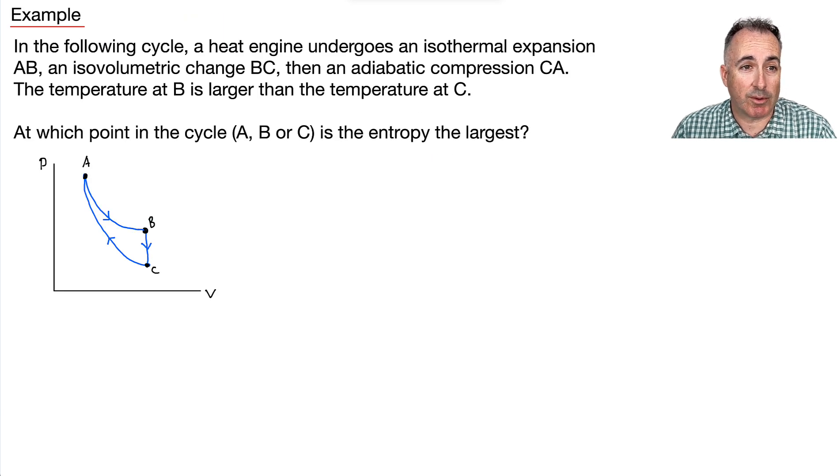Okay, let's do another example. So here we have a cycle where a heat engine undergoes an isothermal expansion, A-B, then an isovolumetric change, B-C, and after that an adiabatic compression, C-A. Now we know that the temperature at B is larger than the temperature at C. We're told that. Okay, so at B here, it's larger. Here, it basically cools. So that's important to know. And the question is, at which point in the cycle, at A or B or C, is the entropy the largest.